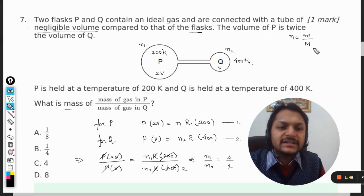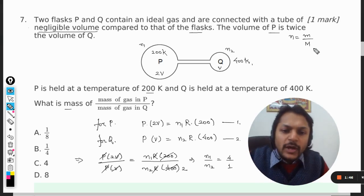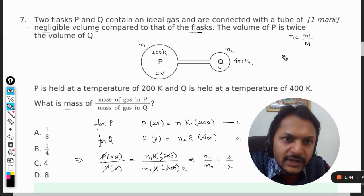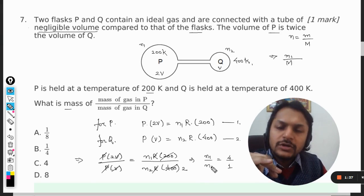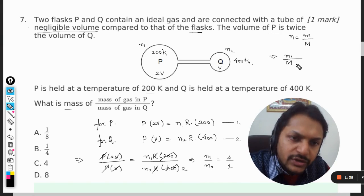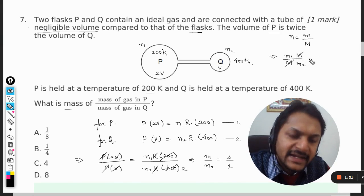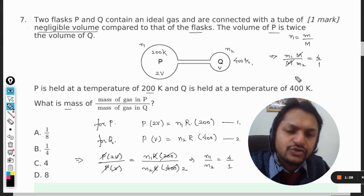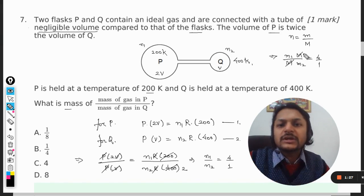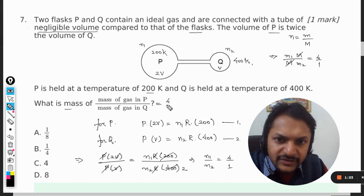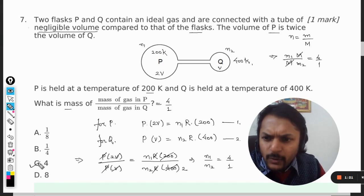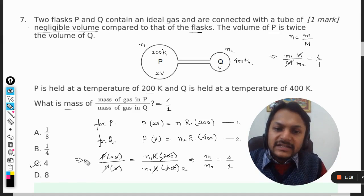This is how we find the number of moles of gas. Now we substitute this into n1 by n2 equals 4, so we get m1 divided by m2, and M gets cancelled out. Again, the ratio for m1 and m2 is coming out to be 4. So mass contained in P is 4 times, so it is 4 by 1. Our answer is C.